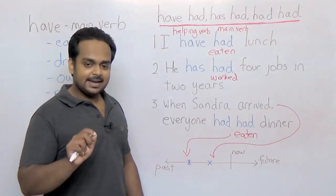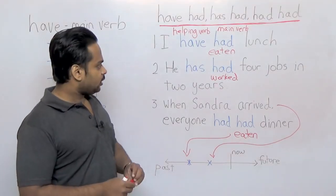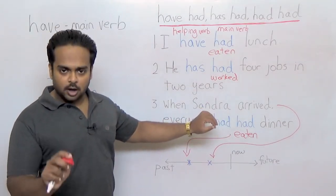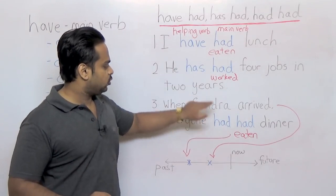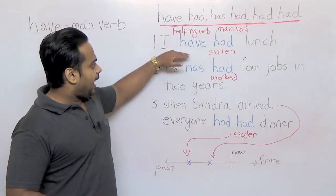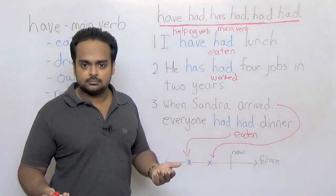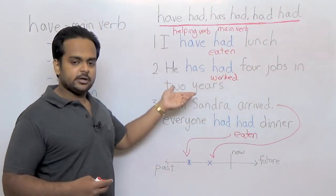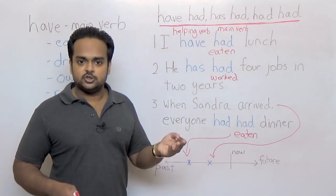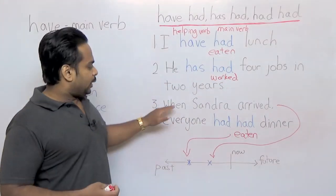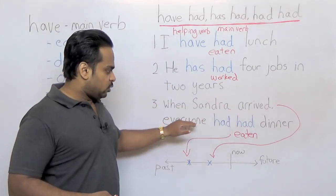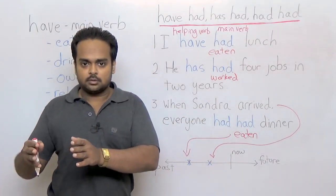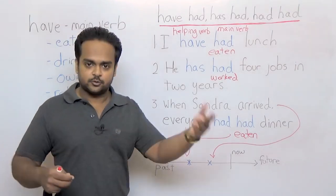The first is making negative sentences. To make negative sentences with any of these, you can simply add a NOT to the first HAVE or HAD. So I haven't had lunch, so I'm hungry. Or he hasn't had four jobs in two years, he's had only three jobs. Or when Sandra arrived, everyone hadn't had dinner, so there was still some food left over or there was still some dinner to give to Sandra.